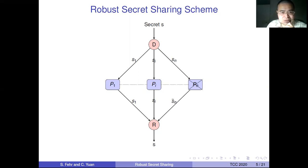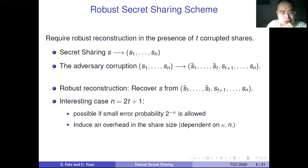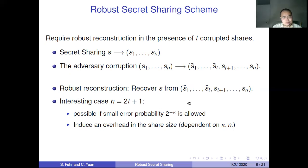This is called the robust secret sharing scheme. The formal definition is: we have a secret S and generate N shares. The adversary corrupts some of them — for example, T shares. Then the reconstructor can recover S from these N shares in the presence of T corrupted shares. The number of corrupted shares can be at most half N.